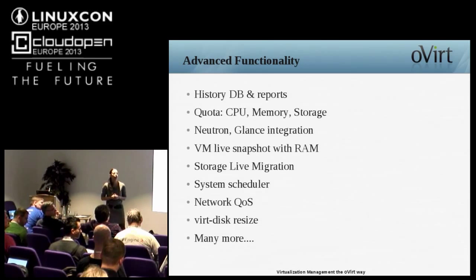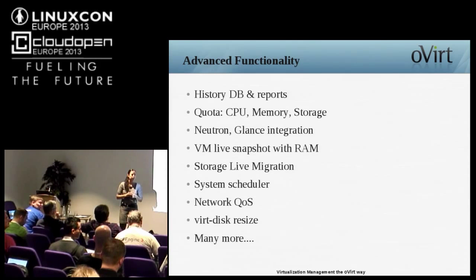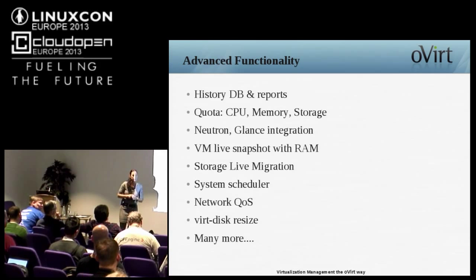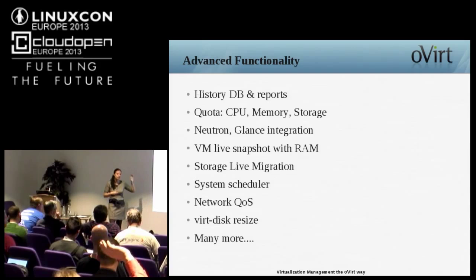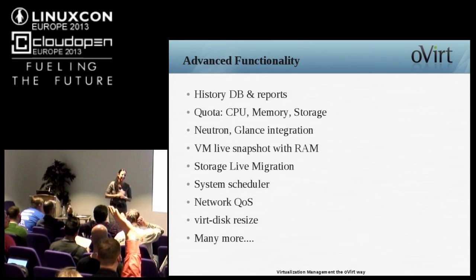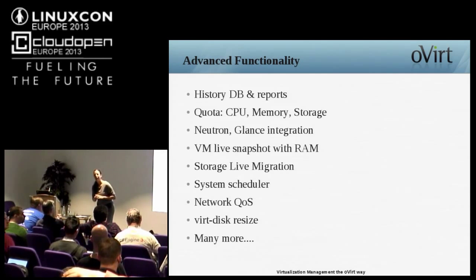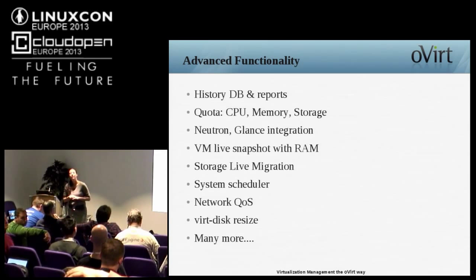Question from audience: What is the overhead footprint of KVM — are you using plain KVM or adding extensions for live migration? Answer: We're using whatever is available upstream — KVM, QEMU — with no tweaks. And yes, since oVirt node is based on Fedora, you do get a newer version of KVM.